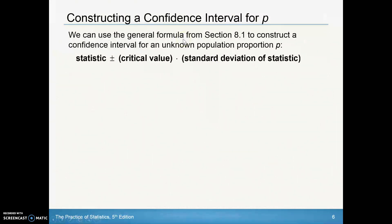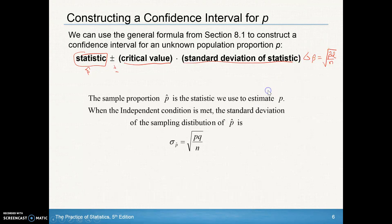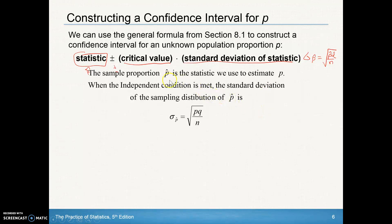We can use the general formula to construct a confidence interval. Our general formula is that we have our statistic, and in this case this will be our p hat, plus or minus our critical value, which we'll talk about in a second, times our standard deviation of the statistic. The standard deviation of our p hats is that square root of p, q over n. But when we don't know p or q, we can substitute in p hat and q hat as good unbiased estimators.